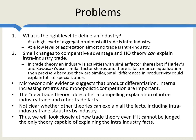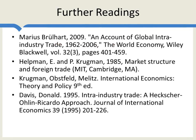Here is some further reading. Marius Brülhart has a good account of the statistics across nations. Helpman and Krugman, key players in new trade theory, summed up much of their early 1980s work in the book Market Structure and Foreign Trade. A more recent textbook by Krugman, Obstfeld, and Melitz also has good material on this subject. A key paper in the counter-attack — showing that Heckscher-Ohlin and comparative advantage could explain intra-industry trade — is an important paper by Donald Davis.